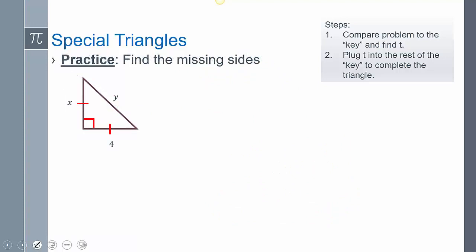So I want you guys to practice a few of these. So go ahead and pause it and practice this one. So going over it, comparing it to the key. T, T, T root 2. It says it's a 45, 45, 90. So that's going to equal 4. That's going to equal X. That's going to equal Y. So that means X equals 4 if I plug them in. And Y equals 4 root 2.